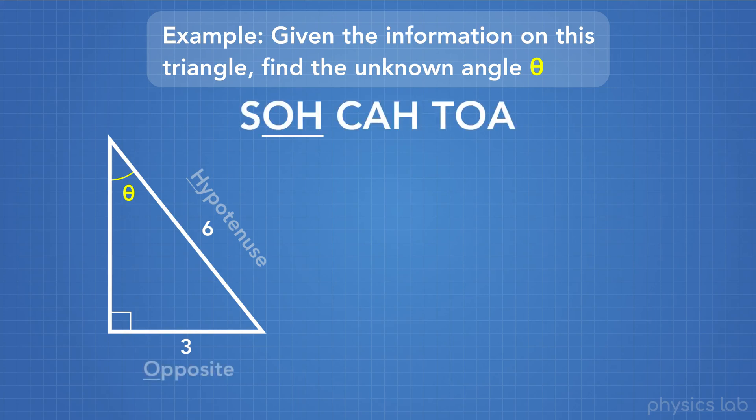So which trig function uses opposite and hypotenuse? We know that sine of theta equals the opposite side divided by the hypotenuse side. So sine of theta equals 3 divided by 6.